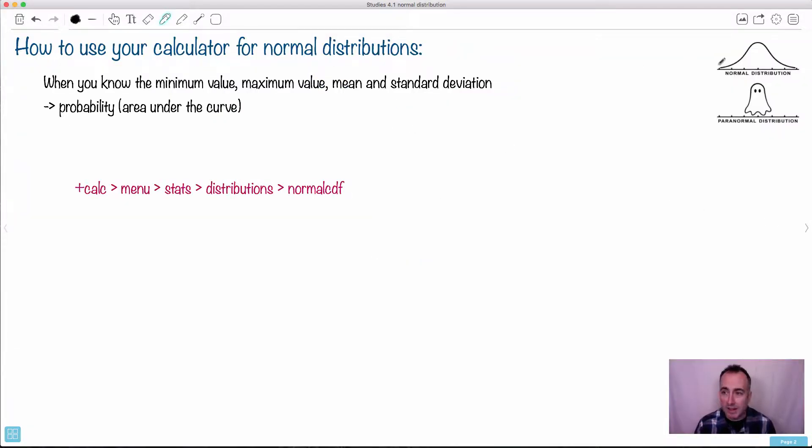All right, so how do we use our calculator for this? So if we're going to use our calculator for normal distributions, that might be something that's helpful to know. So this helps if you know the minimum value and the maximum value, and you know the mean and the standard deviations, then it gives you the probability. This is the idea behind it. So when you know these things, you use this function. And this function is called normal CDF. That is the key thing here. Normal CDF. CDF stands for cumulative distribution function. So this here is some sort of function here. You're going to have to tell it the min, you're going to have to tell it the maximum value, you're going to have to tell it the mean and the standard deviation.